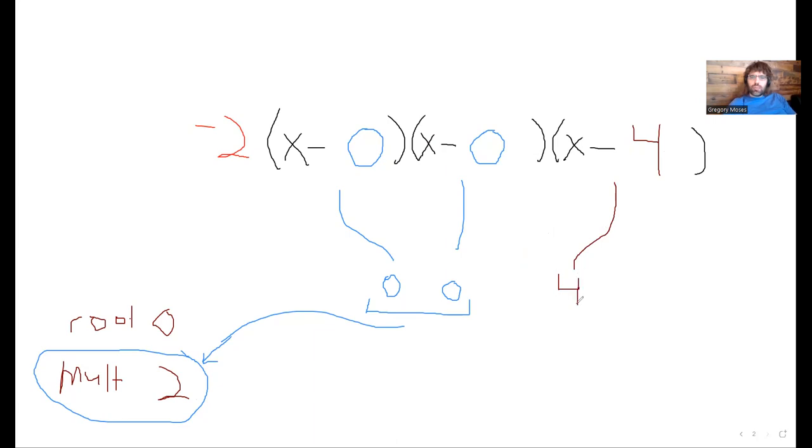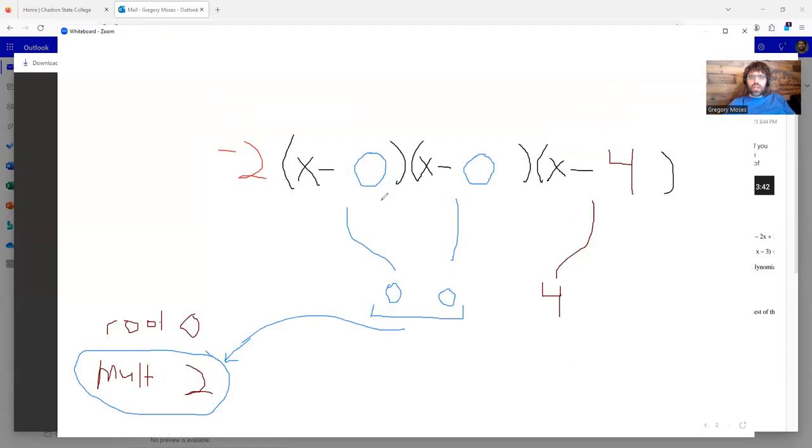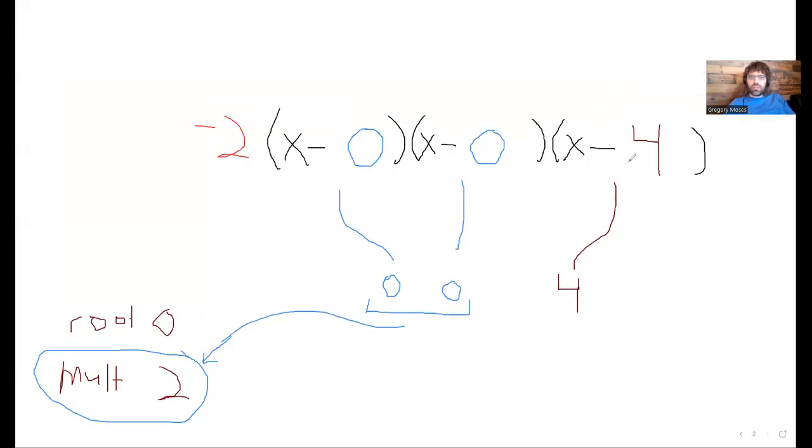Well, now we have a root of 4. That's fine. What did we want? We wanted a root of 0 with multiplicity 2. We wanted a leading term of negative 2x cubed. We have both those things. So we also have a root of 4, which is fine. The problem didn't say we shouldn't have a root of 4. It didn't say anything about this other root.